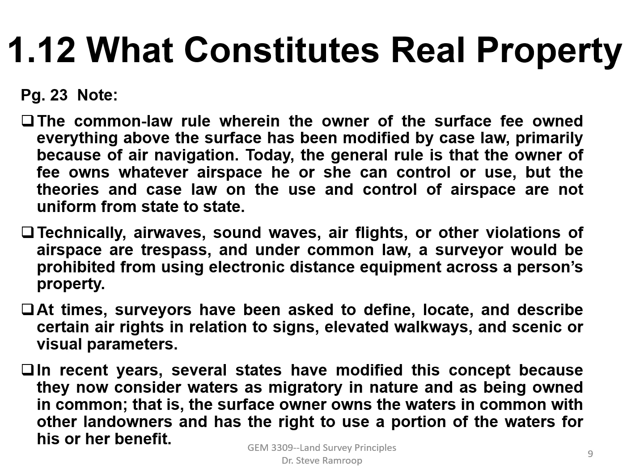Continuing on page 22, under the common law rule, the owner of the surface fee owned everything. The owner of a fee simple owns everything above the surface, but this has been modified by case law primarily because of air navigation. Today the general rule is that the owner of the fee simple owns whatever airspace he or she can control or use, but theories and case law on airspace are not uniform from state to state.